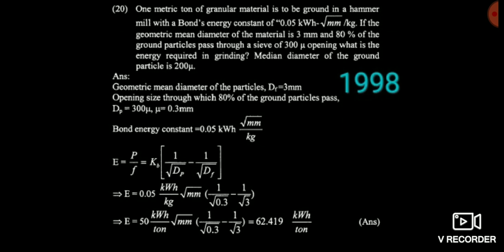You don't have to worry about the 80% — simply use Bond's law. It is the ideal, generalized case. You simply consider the diameters of feed and product. The Bond's constant is 0.05, the product diameter is 300 micron which equals 0.3 mm — you must convert micron to mm by dividing by 1000. The feed diameter is 3 mm.